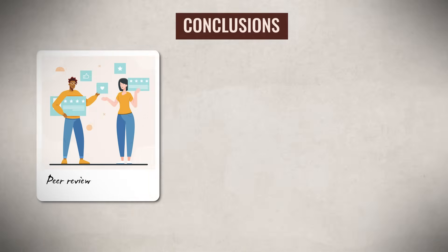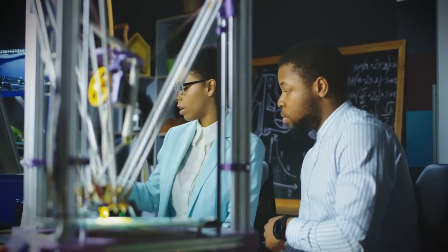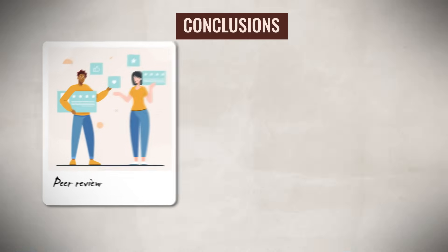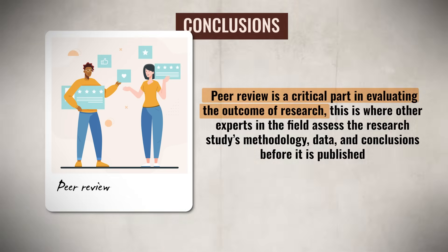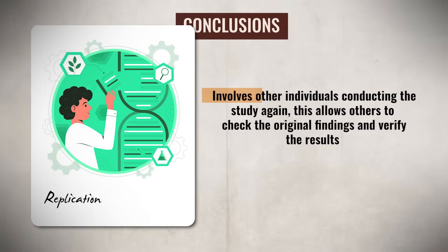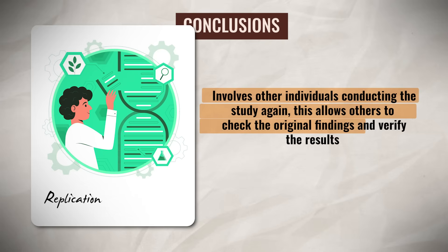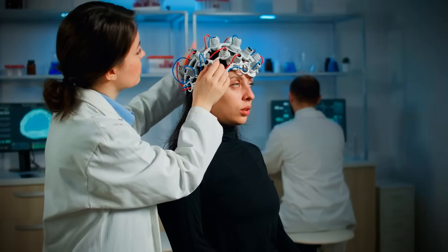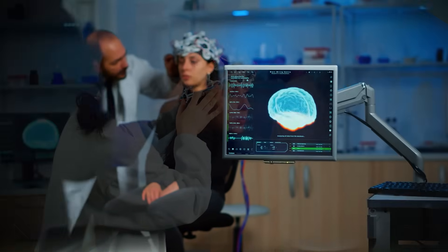Now we're almost done. The last topic is conclusions — specifically peer review and replication. Peer review is where other experts in the field assess the study's methodology, data, and conclusions before it is published. Replication involves other individuals conducting the study again to verify the results. Together, peer review and repeated replication allow scientific research to evolve and ensure that the standards of the experiment remain high.